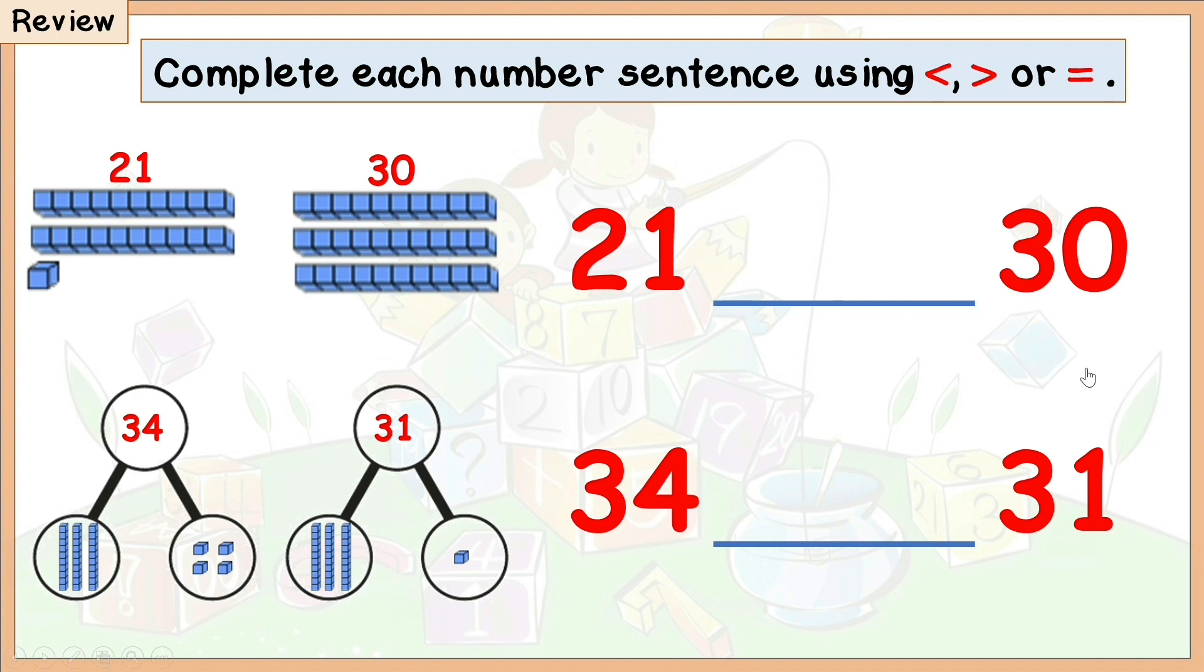Are you done? Let's check your answers. 21 is less than 30, and 34 is greater than 31. Did you get both of them right? Well done.